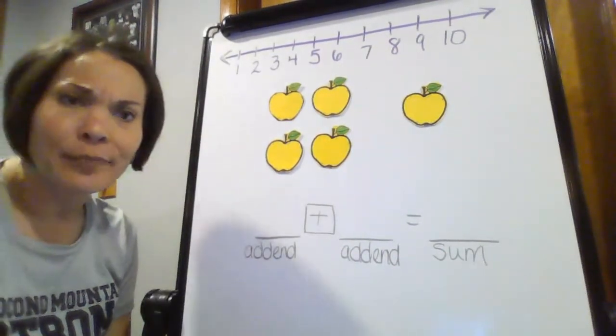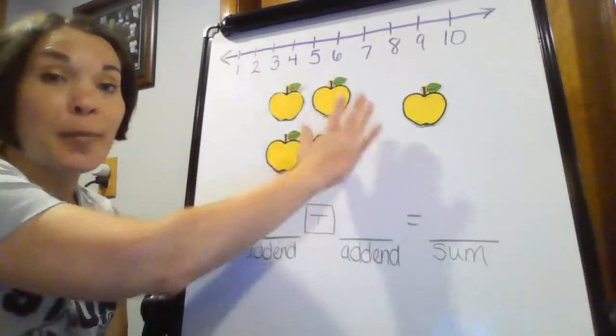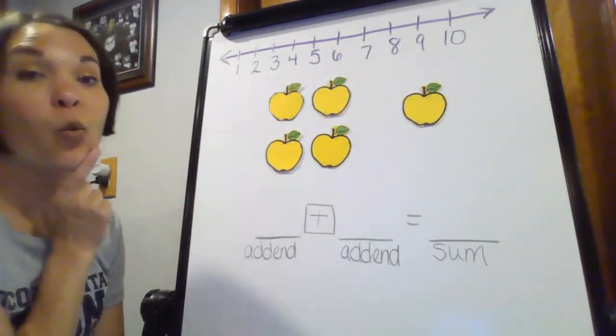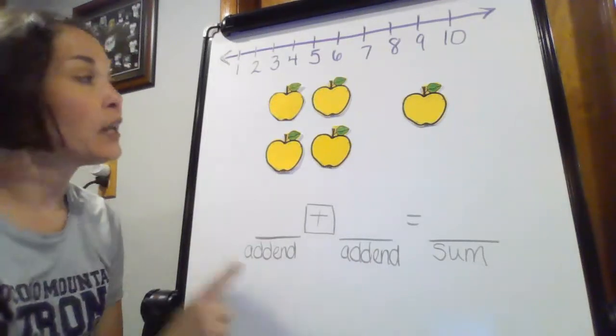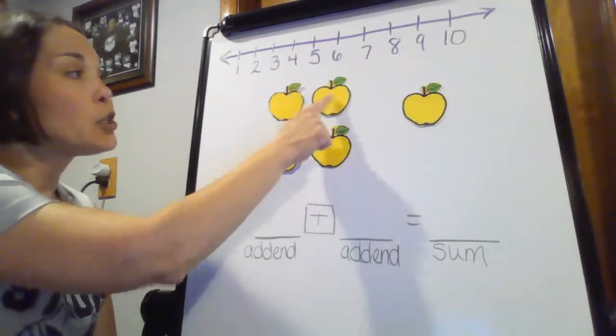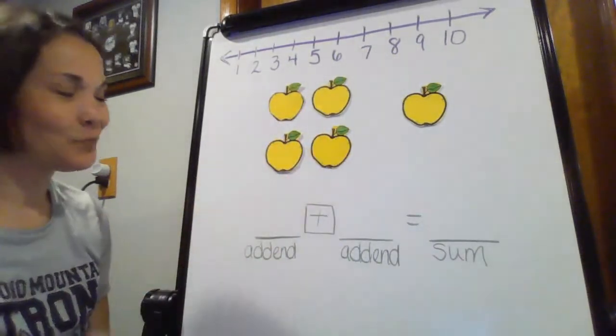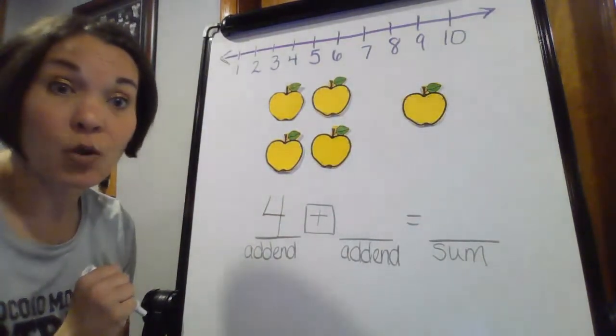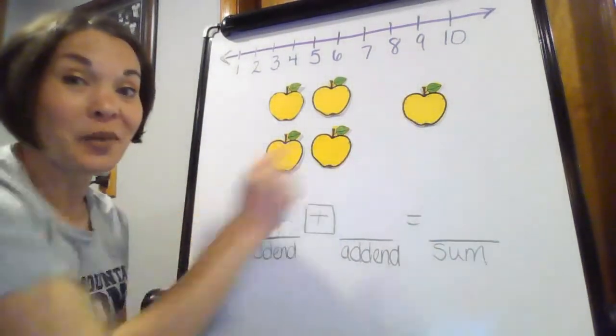Well, how am I going to do that? Well, I'm going to look at my picture. The picture is going to help me. So, what did she start with here? She started with four apples. One, two, three, four. Then she picked one more. There's my one.